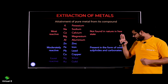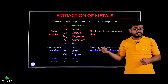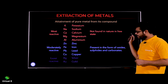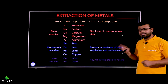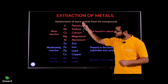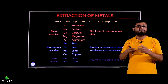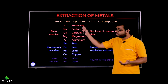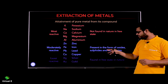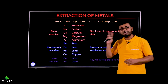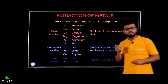Moderately reactive metals are present in the form of oxides, sulfides, and carbonates — all three forms we discussed. The least reactive metals can be found in free state in nature. Remember: as you go down the reactivity series, elements start to be found in free form. The ones at the top are not free; the middle ones may be found in oxides, sulfides, and carbonates; and the last ones you get directly.